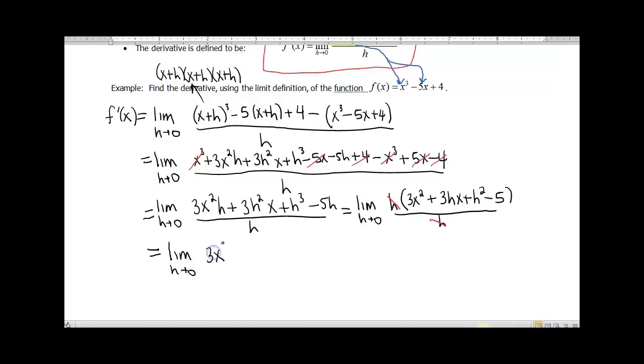Since we now have a nice function, we no longer have our h in the denominator. If we evaluate this limit, we're going to end up getting 3x² - 5. So that is our derivative function when our original function was x³ - 5x + 4.